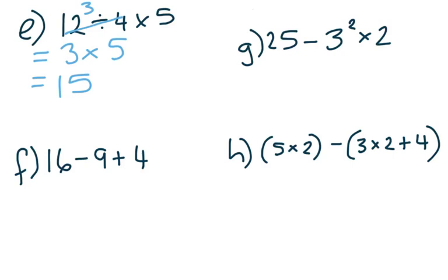Part F is the same but it's to do with addition and subtraction. Again, they're in the same channel. So we just work left to right on that. So 16 take 9 is 7. So we would have 7 add 4 to give us 11 as our answer.